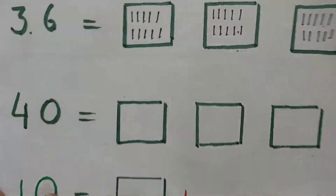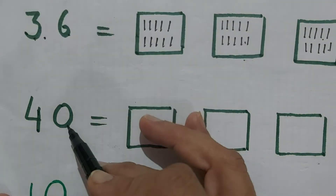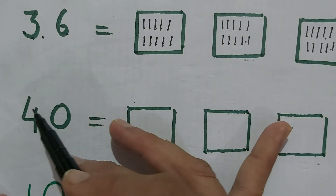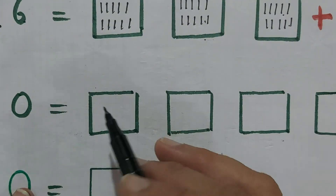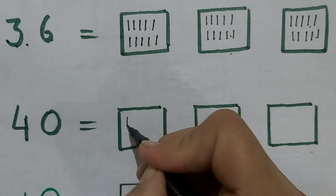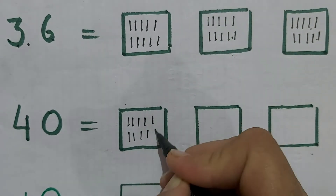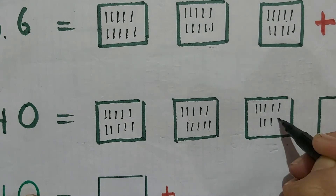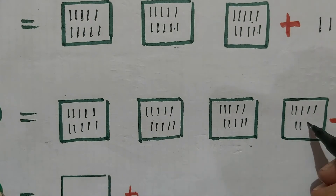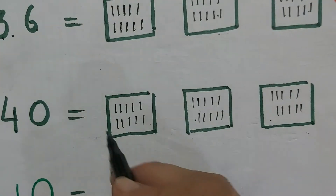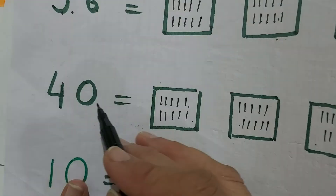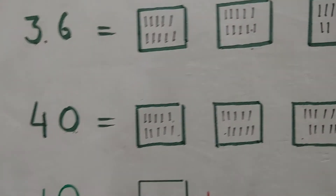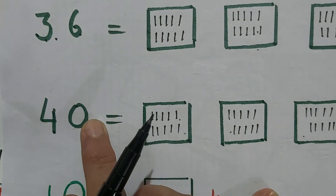Here is the number 40. How many tens? 4 tens. How many ones? 0 — 0 means nothing. So first of all, we will draw 4 squares and inside each square, we will draw 10 lines each. See: 1, 2, 3, 4 — 4 tens. And how many ones? 0. So we will not draw anything, because at the place of ones it is written 0, and 0 has no value — 0 means nothing.